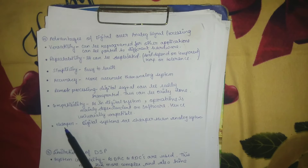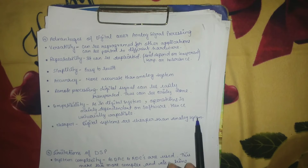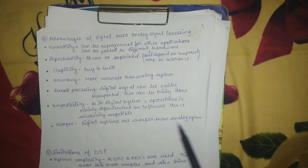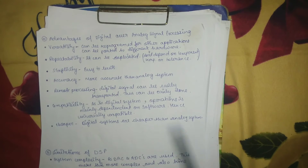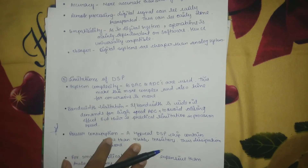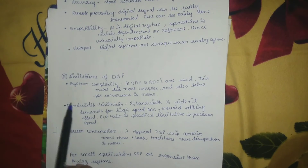Next is cost. Digital systems are cheaper than analog systems. The reason is that analog systems require more analog components like resistors, capacitors, and so on. So digital systems have a cost advantage for larger applications.